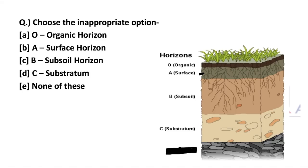The next question is: choose the inappropriate option. These are the different horizons of the soil. The organic horizon is correctly represented by O; the surface horizon by A; the subsoil horizon by B; and C is the substratum, correctly represented by C. Let's discuss each one. The organic horizon contains organic matter such as decomposing leaves and manure — it is the topmost layer.